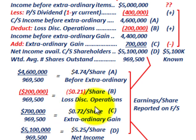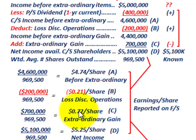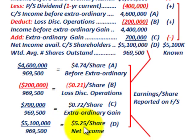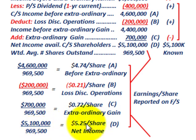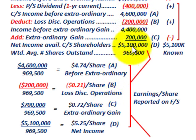The extraordinary gain also has to be broken out: $700,000 divided by the weighted average shares outstanding gives $0.72 per share. And the net income available to common stock shareholders — $5,100,000 divided by the weighted average shares — gives $5.25 per share. This is how we break these things out based on the extraordinary gains and losses.